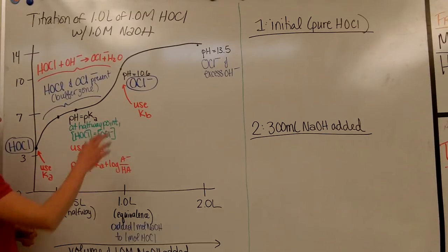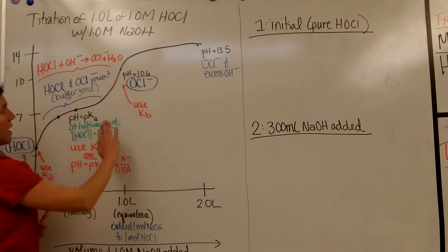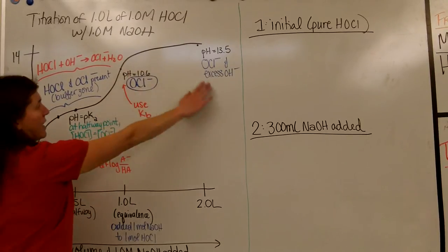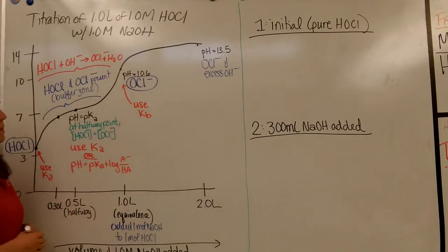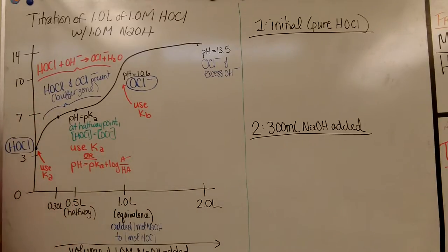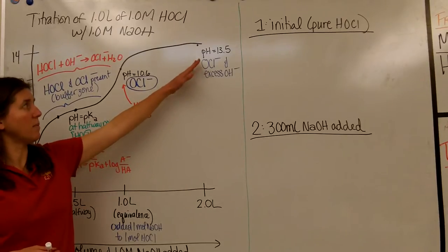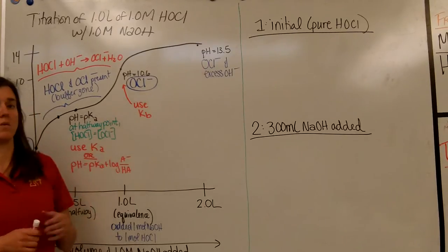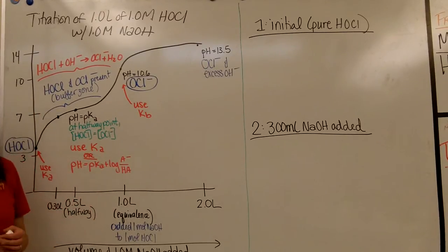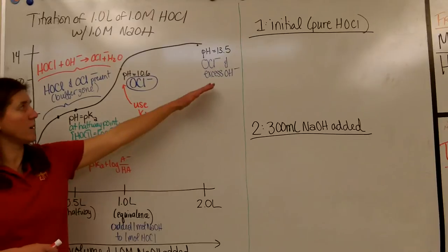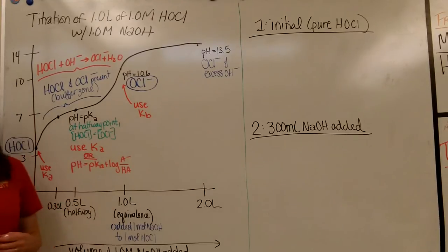Over here at the end, if we keep going and adding excess hydroxide, the pH will get very high — like 13 to 14. What's present in solution at this point is the conjugate base, which is the OCl⁻ ion, as well as some excess hydroxide ions that you've added.